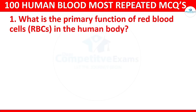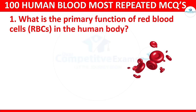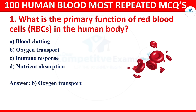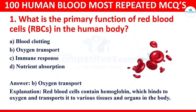Question 1: What is the primary function of red blood cells (RBCs) in the human body? The options are blood clotting, oxygen transport, immune response, or nutrient absorption. The correct answer is oxygen transport. Red blood cells contain hemoglobin, which binds to oxygen and transports it to various tissues and organs in the body.